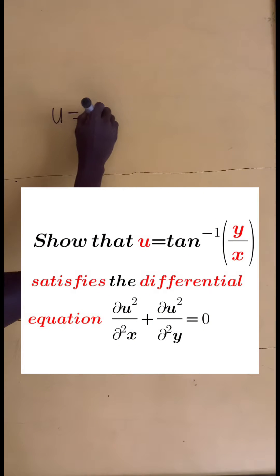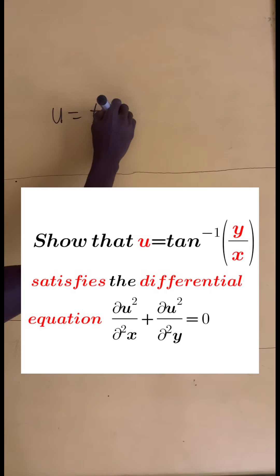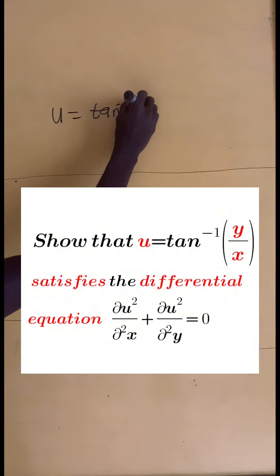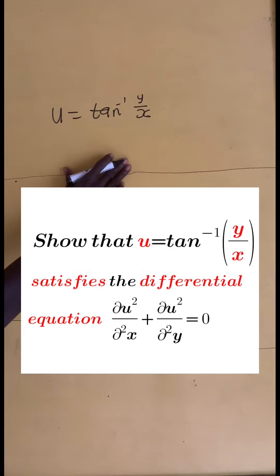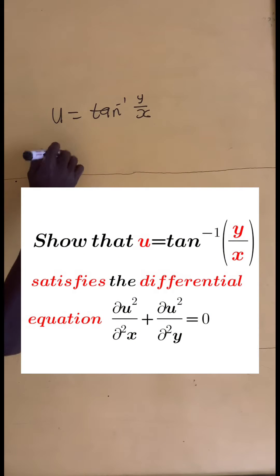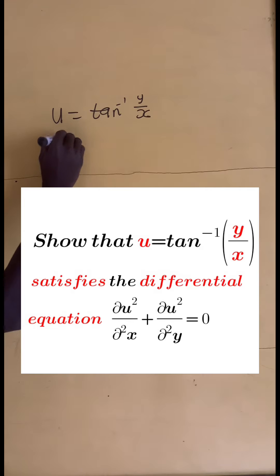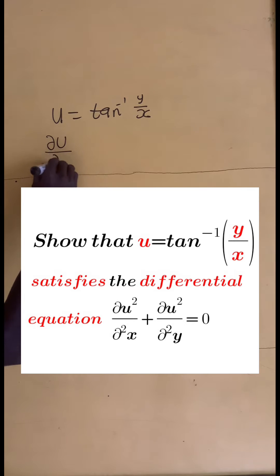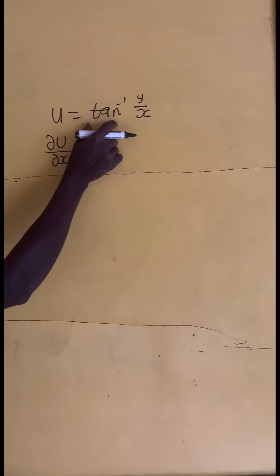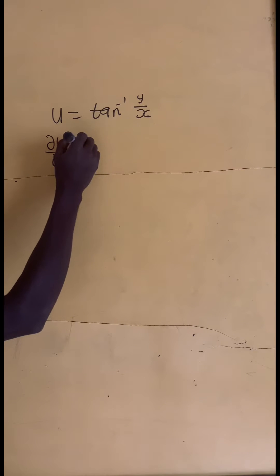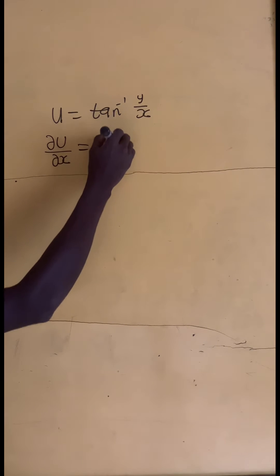Now we have u equals tangent inverse of y on x. To do this, we take the partial derivative of u with respect to x, and then we take the partial derivative of u with respect to y. But before we do that, let us take the derivative of the tangent inverse.